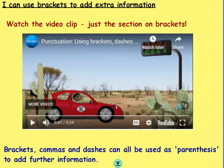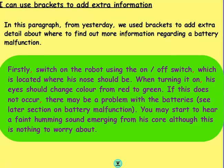But today we're just going to focus on using brackets. In this paragraph from yesterday, we did use brackets to add extra detail about where to find out more information regarding a battery malfunction. The instruction reads: 'Switch off the robot using the on-off switch which is located where his nose should be. When turning it on, his eyes should change colour from red to green. If this does not occur, there may be a problem with the batteries.' The brackets go around 'see later section on battery malfunction', directing you where to go if there's a problem.